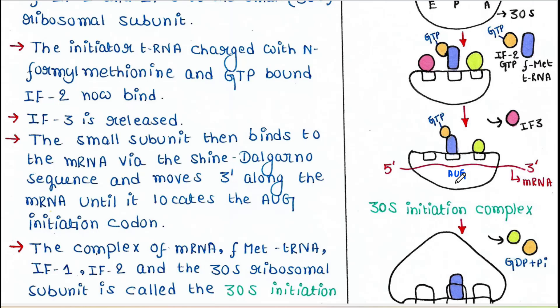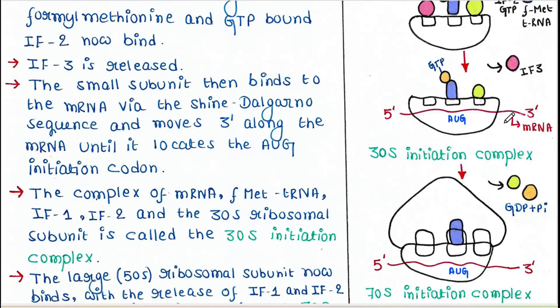The complex of mRNA, F-methionine tRNA, IF1, IF2, and 30S ribosomal subunit is called the 30S initiation complex.